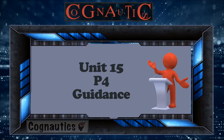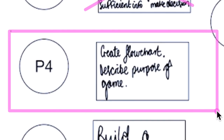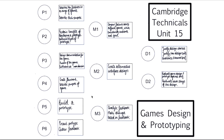We move on to P4 now. Having done P3, which was the largest task, things get considerably easier from here on in. We've crossed the halfway point - P1 is done, P2 done, M1 completed, M2 done, and P3 just about finished. So that's five down, moving on to the sixth out of 11. P4 involves creating a flowchart and describing the purpose of the game.